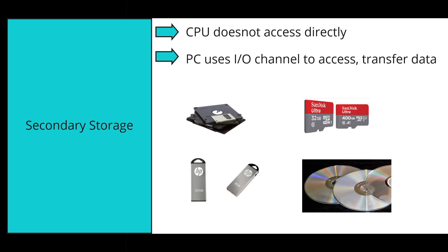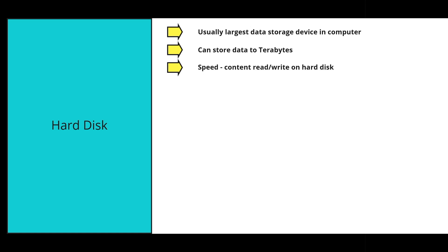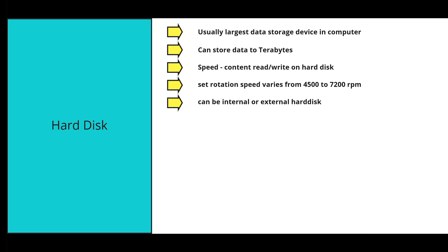Hard disks are usually the largest data storage device in the computer. They can store data from megabytes up to the range of terabytes. Speed refers to the read and write speed on the hard disk, and the rotation speed varies from 4,500 to 7,200 RPM. A hard disk can be either external or internal.